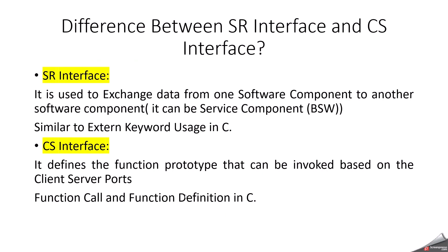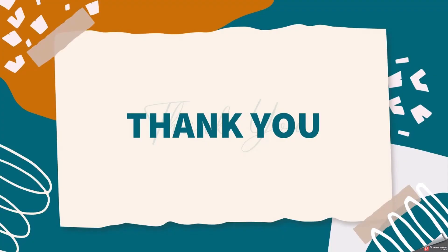What is the difference between SR interface and CS interface? SR interface means sender-receiver interface; CS interface means client-server interface. The sender-receiver interface is mainly used to send data between software components — for example, transferring one byte, two bytes, or up to four bytes via a variable, similar to the extern keyword in C. The client-server interface is mainly used to transfer a larger amount of data between software components via a function call, defining a function prototype that can be invoked based on client-server communication.